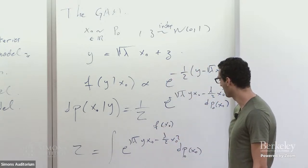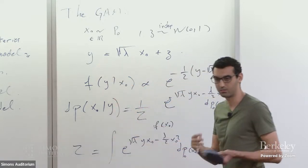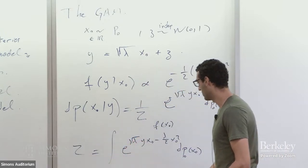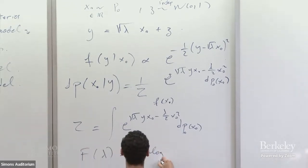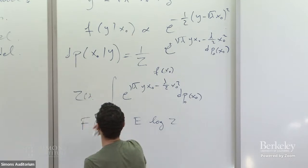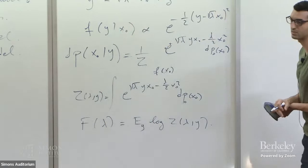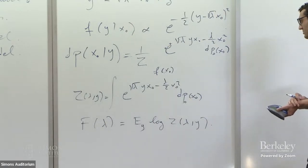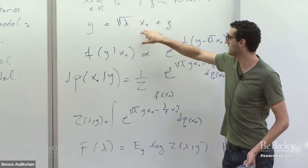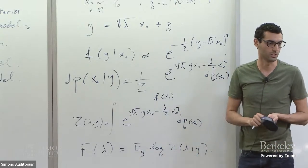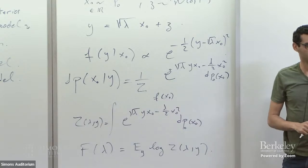The function in the exponential is called the Hamiltonian — it follows from the model definition, but you could have any function here. Note that the Hamiltonian depends on y, which is random, so this whole measure and the partition function are themselves random. If I take the logarithm of Z and take an expectation, I call that F(λ) — the free energy. It's a deterministic function of λ. Here λ is a signal-to-noise ratio: if it's large, you get a lot of information about x₀; if small, very little.